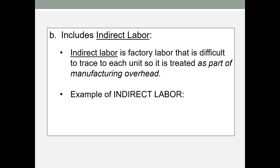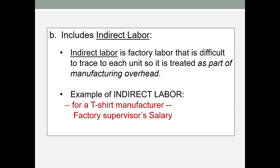Manufacturing overhead also includes indirect labor. Indirect labor is factory labor, but it is difficult to trace to each unit. For a t-shirt manufacturer, this would include the factory supervisor's salary. The factory supervisor works in the factory but doesn't have a specific job on each unit — they oversee scheduling and general operations. The factory janitors would also be included here; they're needed in the factory but do not work hands-on with the product.